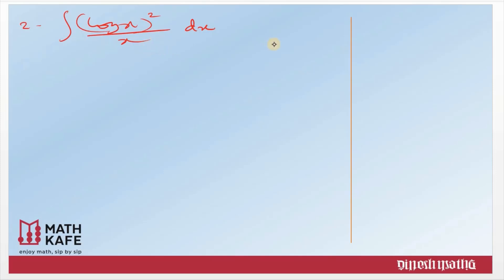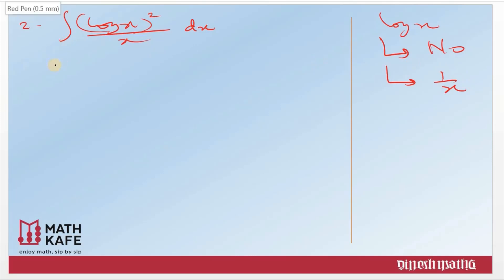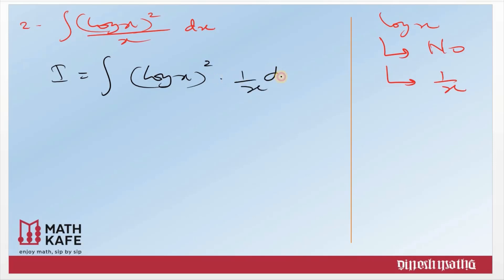How do we integrate? We start our thought process the same way. Do I know the integral of log x? Clearly no. That means we must take log x as the substitution. Second step: do we have the derivative of log x present in the question? Yes, absolutely. The derivative of log x is 1/x, which is present. Rewrite the question as (log x)² into (1/x dx). Once you decide on log x as substitution, write that term first and the leftover with dx.